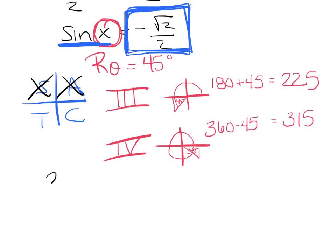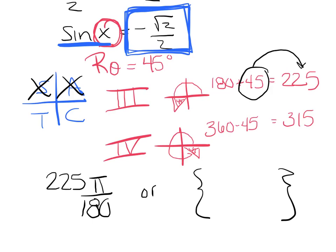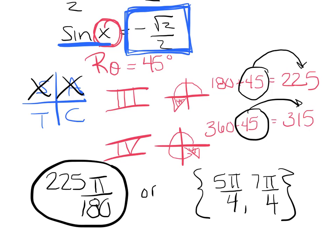Now, again, you could take your 225 and multiply by pi over 180, etc., and simplify, or you can just ask yourself, how many 45s are in 225? I would say 5 of them, so 5 and 45 is pi over 4. How many 45s are in 315? I would say 7, so that's 7 pi over 4. And there you go. If you can't do that in your head, go the old school way and simplify it.